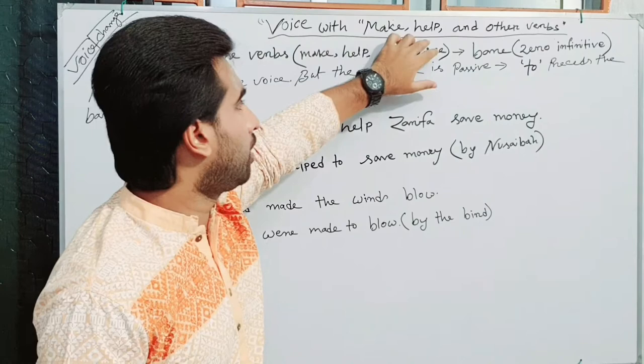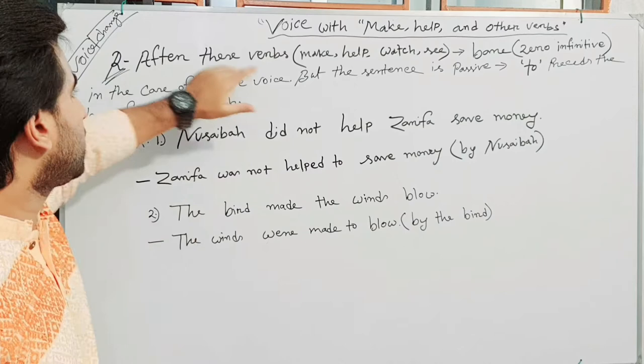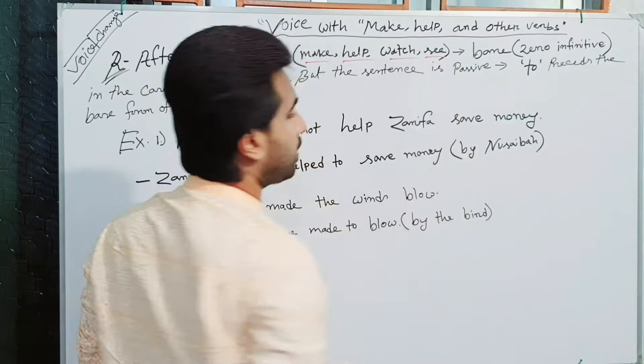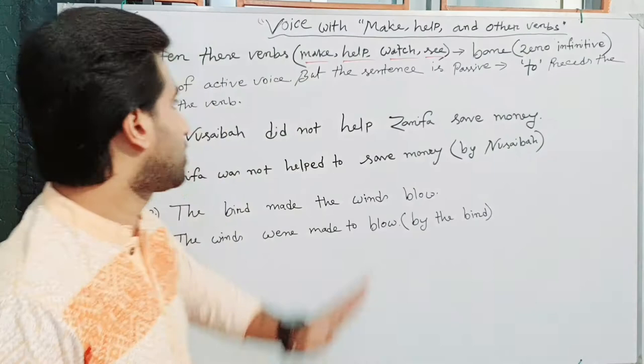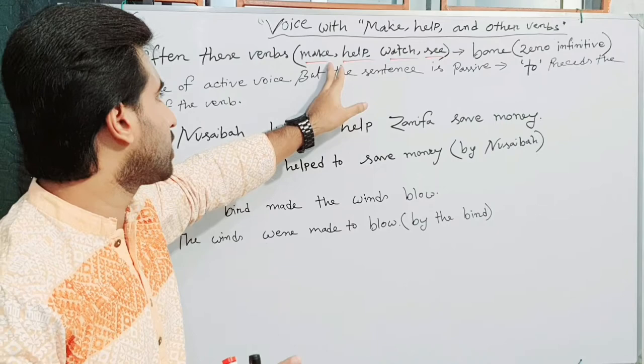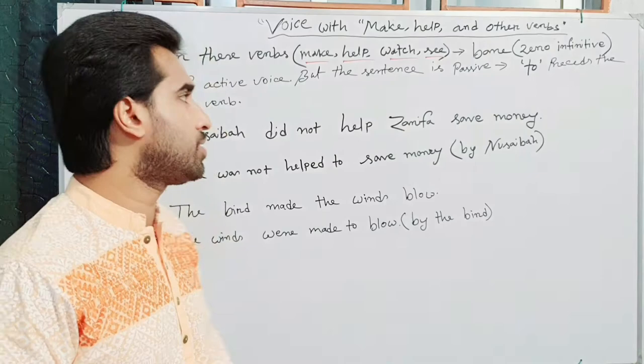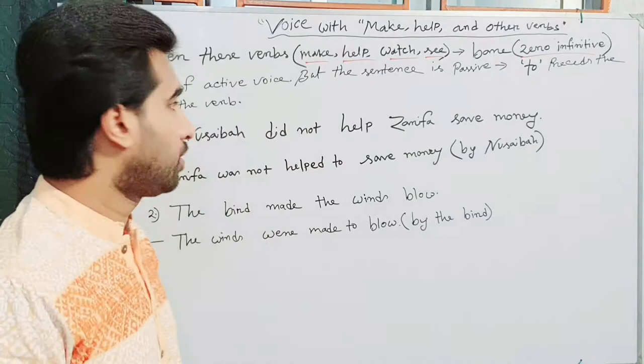Look at this. Make, help, and other verbs. Here is the rule. After these verbs — make, help, watch, see — in the case of active voice, we have to use a zero or bare infinitive. That means, when a sentence contains these verbs — make, help, watch, or see — a zero or bare infinitive is used after them.